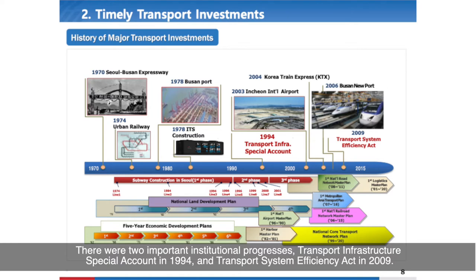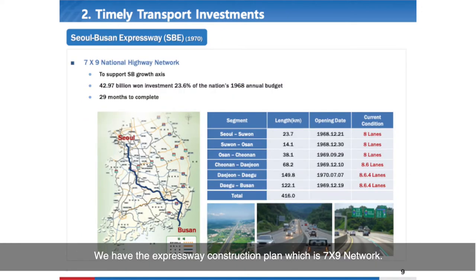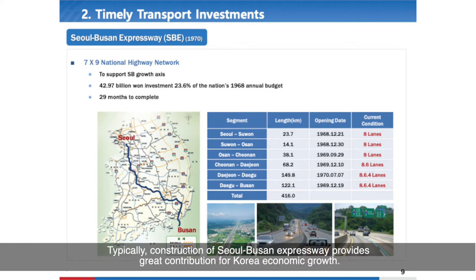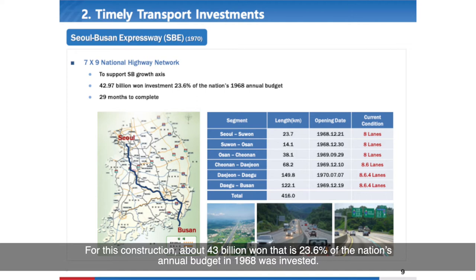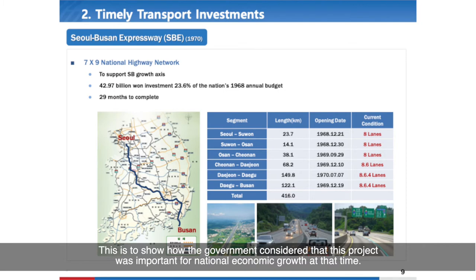There were two important institutional milestones: the Transport Infrastructure Special Account in 1994 and the Transport System Efficiency Act in 2009. Korea has an expressway construction plan with a 7x9 network. Construction of the Seoul-Busan Expressway provided a great contribution to Korea's economic growth. This 416 km expressway was completed in only 29 months, with about 43 billion won invested — 23.6% of the national annual budget in 1968.